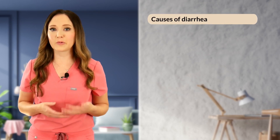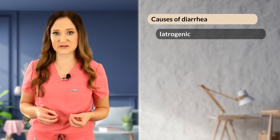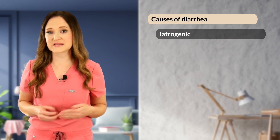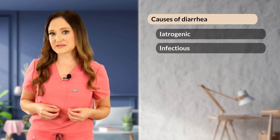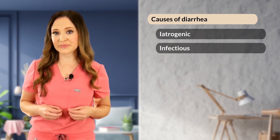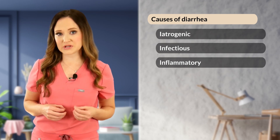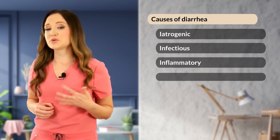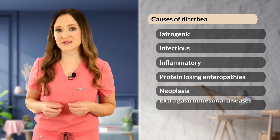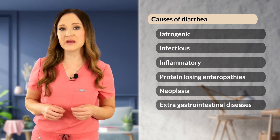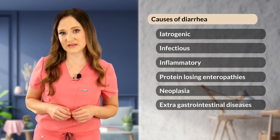Causes of diarrhea are wide and varied and include iatrogenic causes secondary to medications such as gastroprotectants, antibiotics, chemotherapeutics, immunomodulatory medications, and NSAIDs. Infectious processes include parasitic, bacterial, viral, fungal, and protozoal causes. Inflammatory and immune-mediated causes include IBD associated with loss of local immune tolerance to normal dietary and bacterial components, protein-losing enteropathies, and neoplasia. Extra-gastrointestinal diseases such as disease in the hepatobiliary system, pancreas, endocrine system, or other miscellaneous abnormalities are also causes. This is not an exhaustive list, and expanding upon each is outside the scope of this urgent care series.